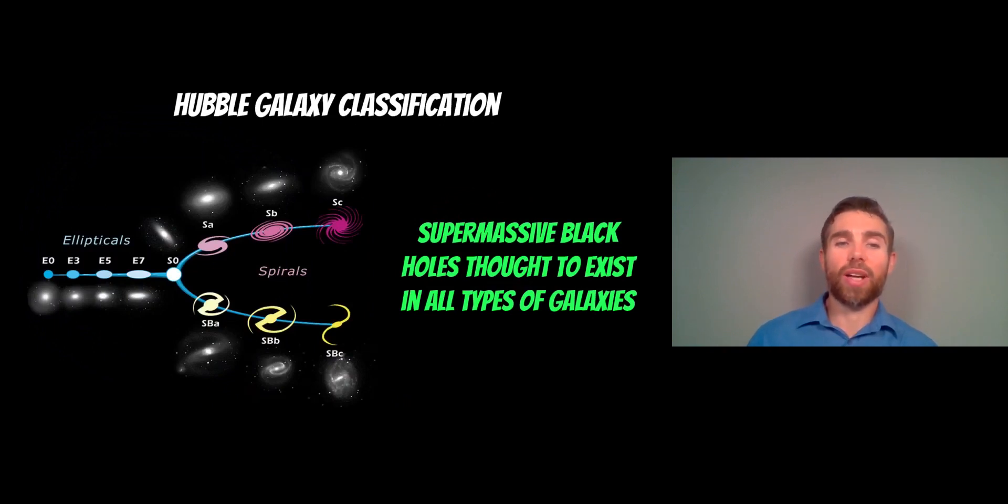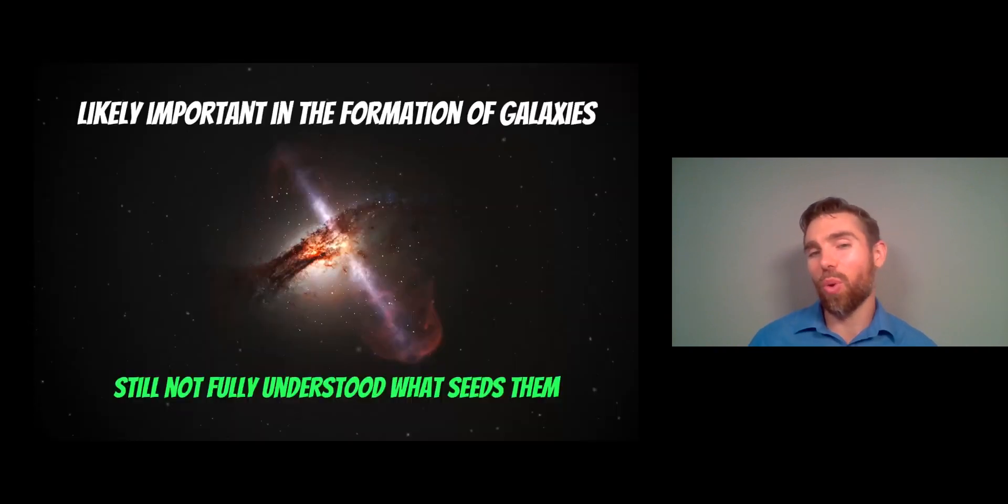In the Hubble galaxy classification, you have this tuning fork which gives all the classification to different types of galaxies. On the left you have elliptical galaxies, and on the right you have two pathways for normal spiral galaxies - galaxies with spiral arms that are more disc-like. On the bottom you have barred spirals - spiral galaxies with a bar. Our Milky Way is actually a barred spiral. Supermassive black holes are thought to exist in most of these galaxies, regardless of their type.